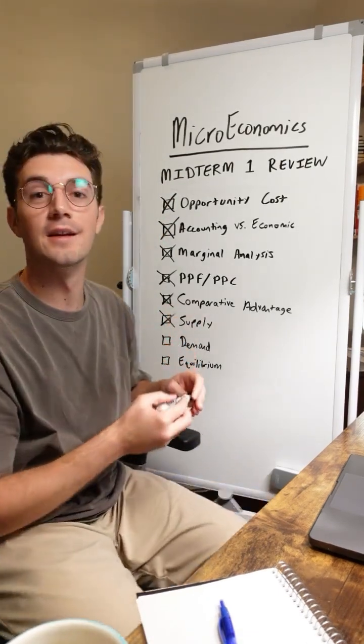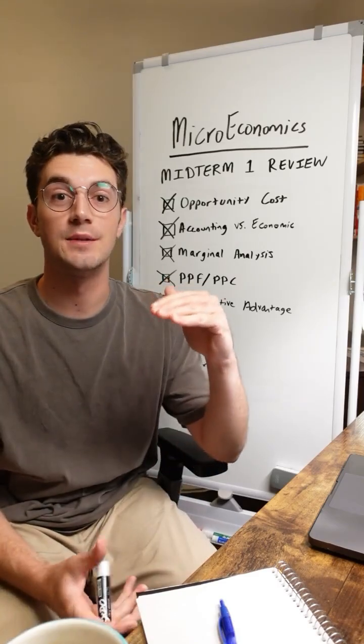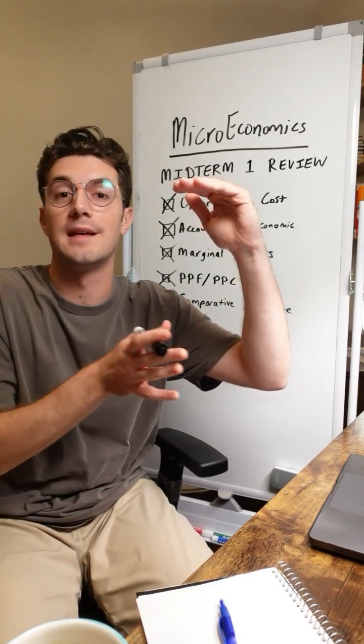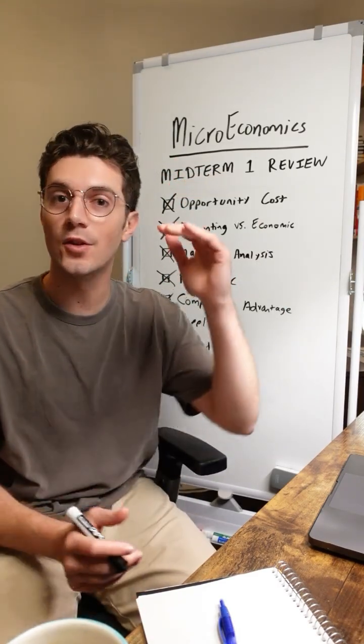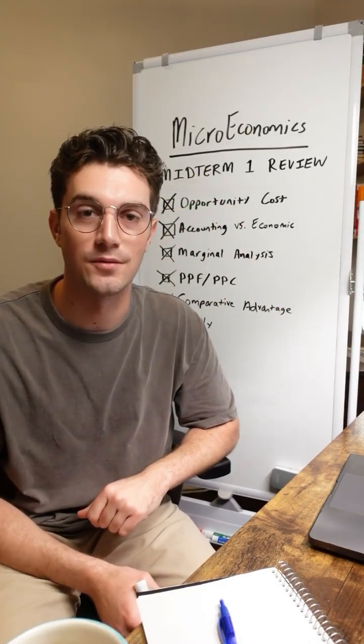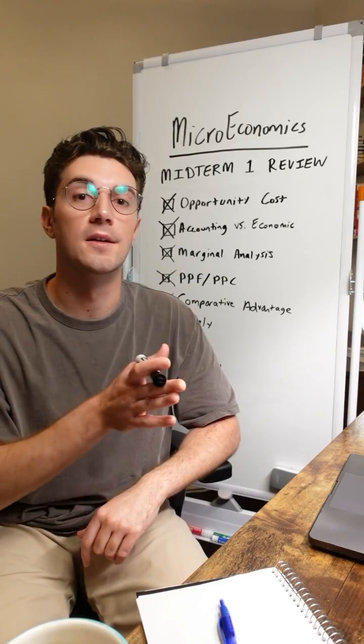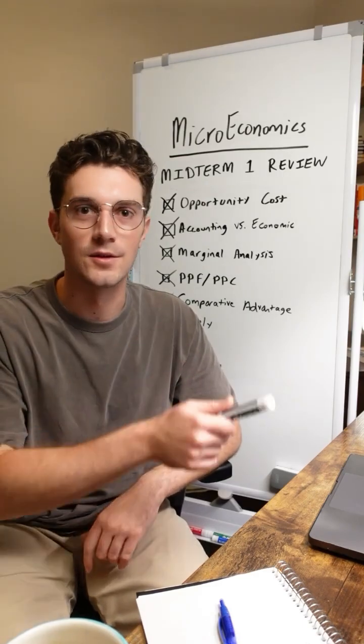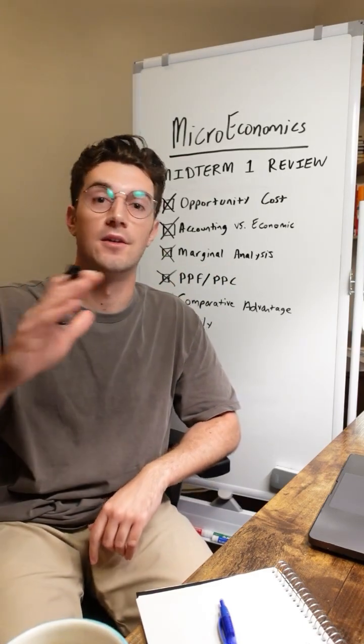All right, next up here is demand. It's downward sloping because as price increases, consumers demand less units. And same boat here, when price changes, that's only going to change the coordinate that we lie on the current demand curve and the corresponding quantity demanded along the x-axis. Whereas there's demand shifters that change the position of the entire demand curve.